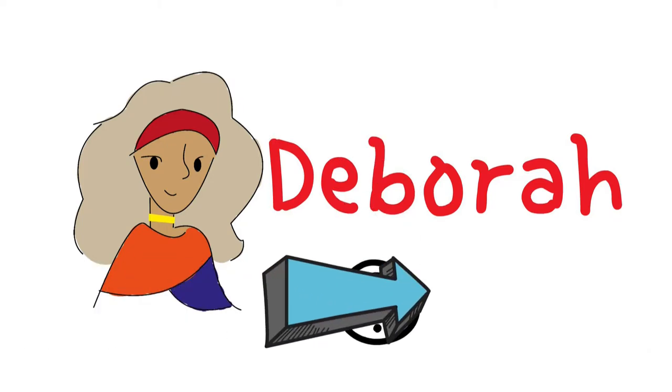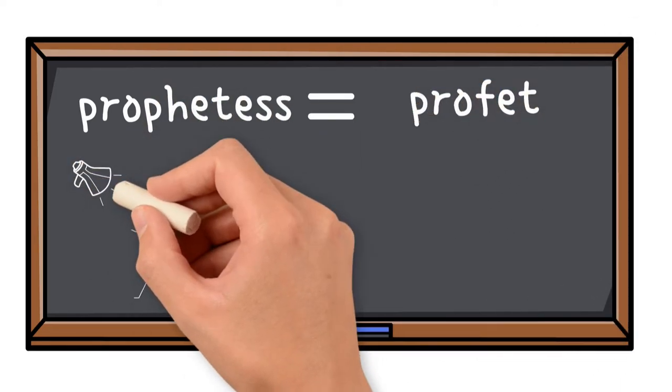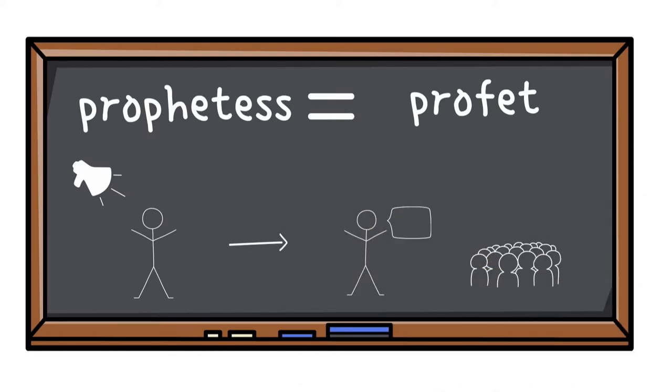A prophetess? What do you mean? Prophetess is the feminine for prophet. A prophet is a person who receives a message from God and announces this message to the people.